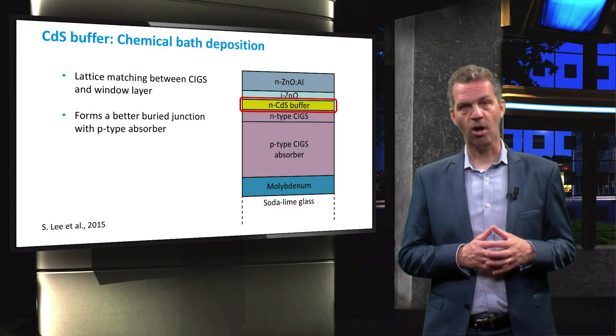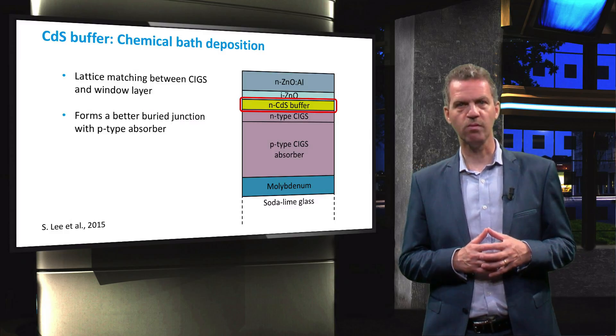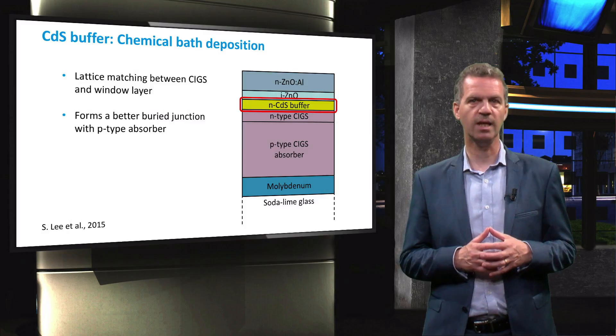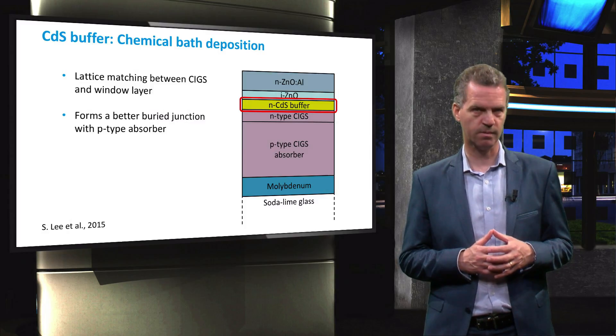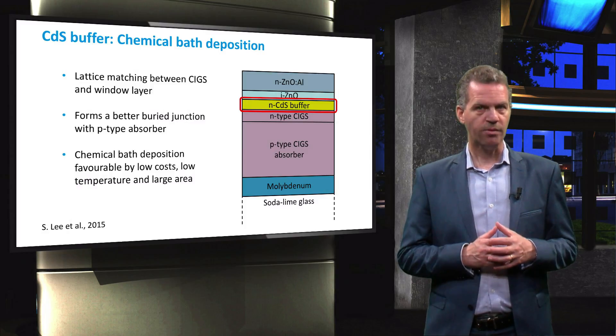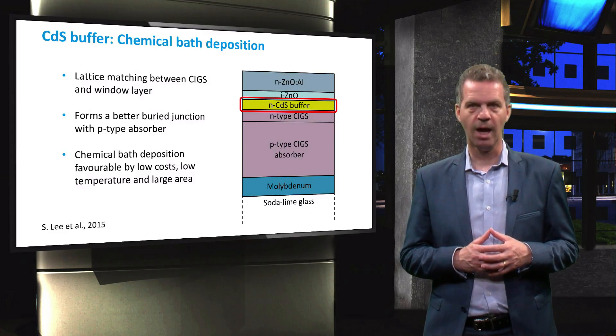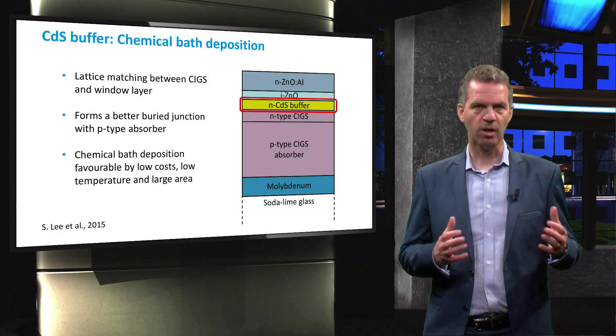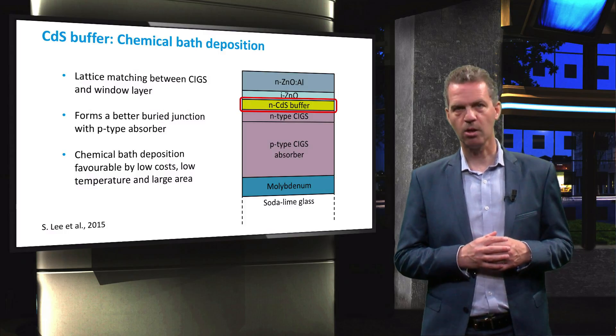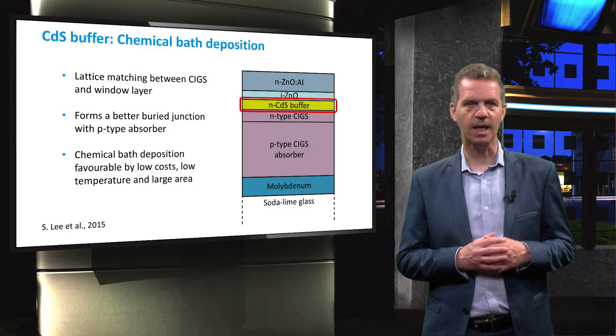Furthermore, the N-type cadmium sulfide layer helps to form a better buried junction in the P-type CIGS. An advantage of using this material as buffer layer is that it can be produced fairly cheap, at a low temperature and on a large area using chemical bath deposition or CBD.